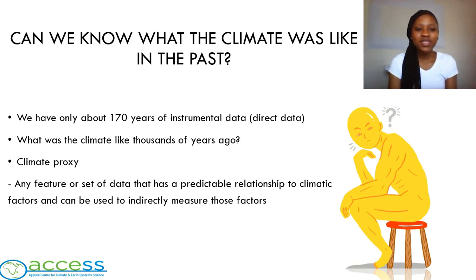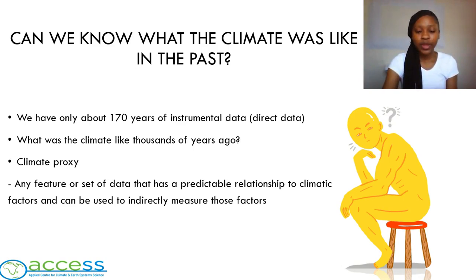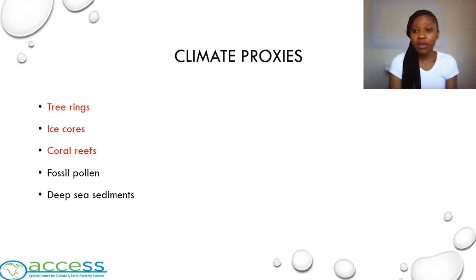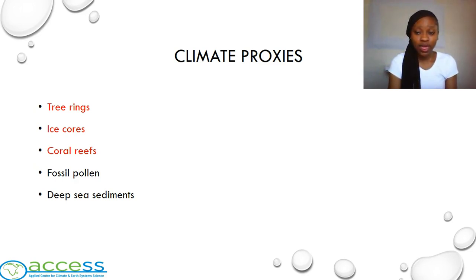Climate proxies are any feature or set of data that has a predictable relationship to climatic factors and can be used to indirectly measure those factors. There are different types of climate proxies — for example, tree rings, ice cores, coral reefs, fossil pollen, deep sea sediments, and plenty more. In this talk, we are only going to discuss the first three that are highlighted in red.